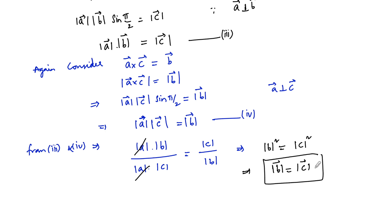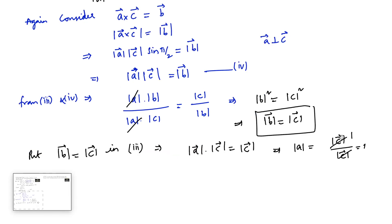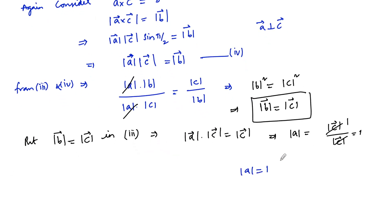Once we've proved that, let us substitute mod b is equal to mod c into equation 3. Putting mod b equal to mod c in equation 3, this implies mod a into mod c is equal to mod c. Therefore mod a is equal to mod c upon mod c, which is equal to 1. So mod a is equal to 1. Hence we proved mod b is equal to mod c and mod a is equal to 1.